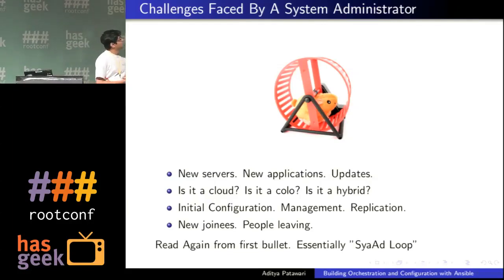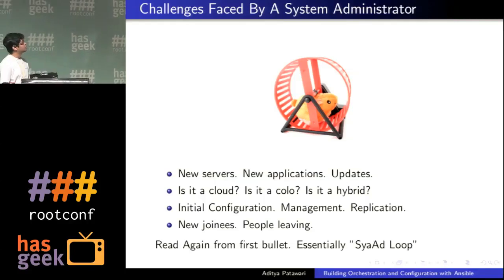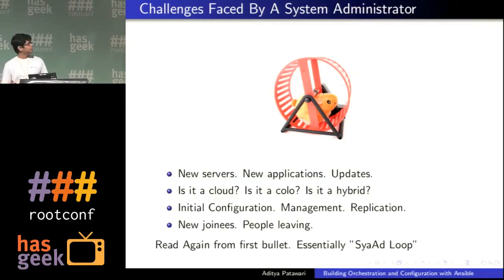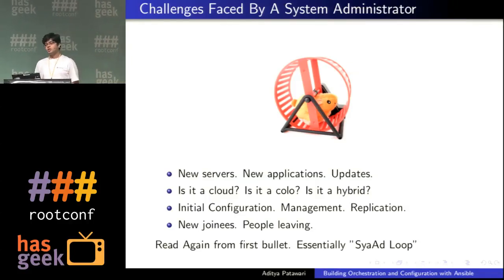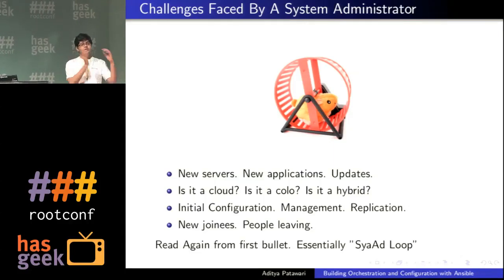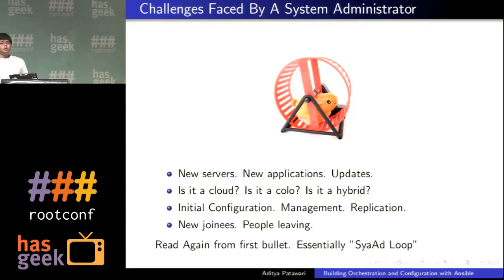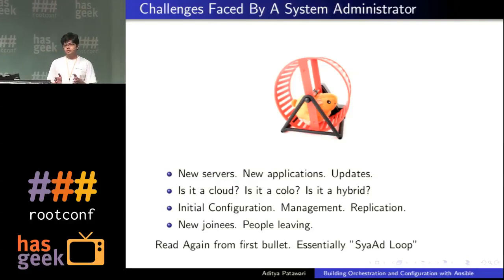As DevOps, you have new servers coming in every day, new applications getting deployed, new features built in, updates — and you have to act very quickly. You have to provision stuff really fast and give your developers or users as quick a response as possible. Nowadays we have hybrid infrastructure: half in co-located data centers, some running on OpenStack or EC2. Handling dynamic nodes of EC2 or OpenStack is somewhat different than handling static data centers.